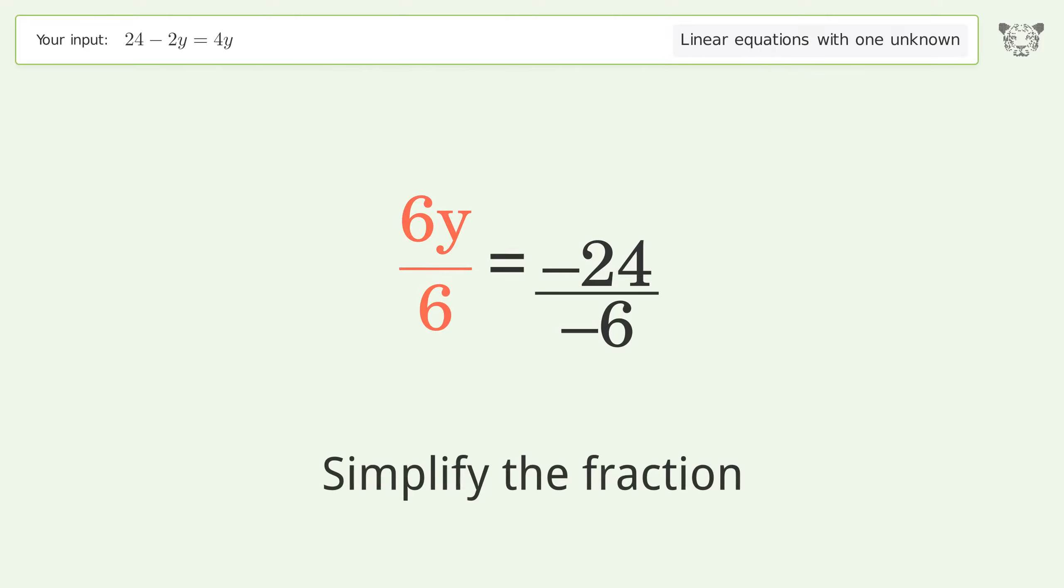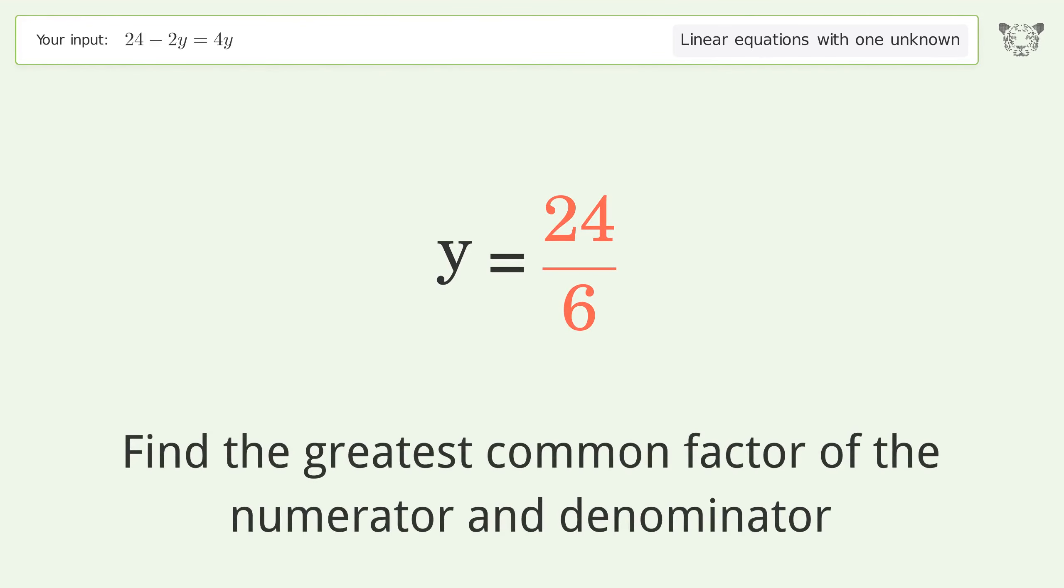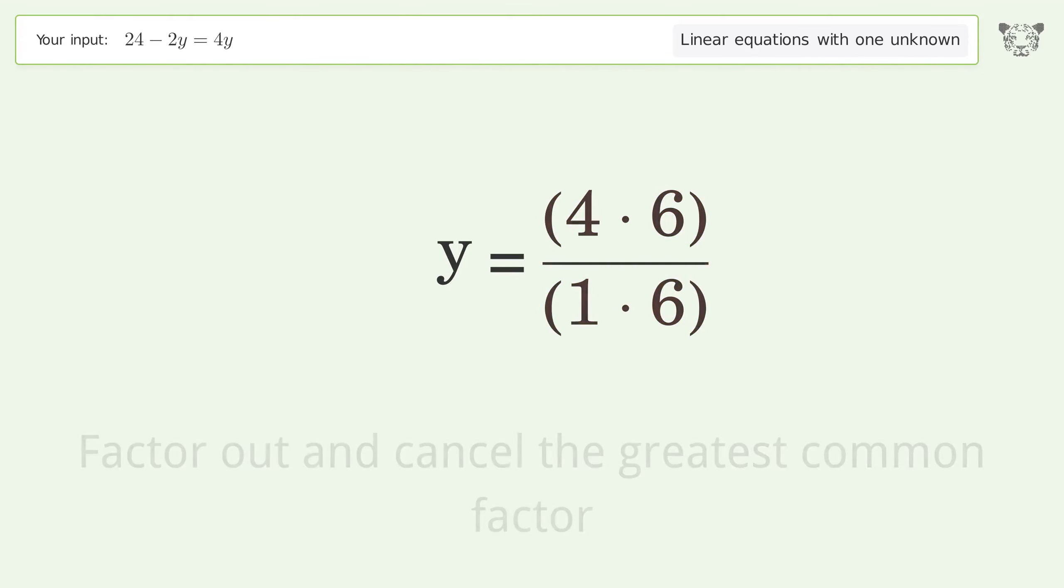Simplify the fraction. Cancel out the negatives. Find the greatest common factor of the numerator and denominator. Factor out and cancel the greatest common factor.